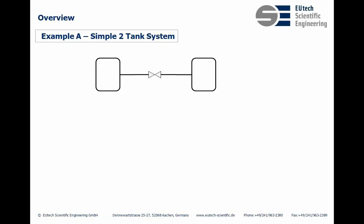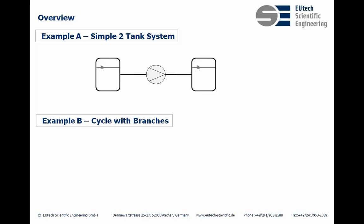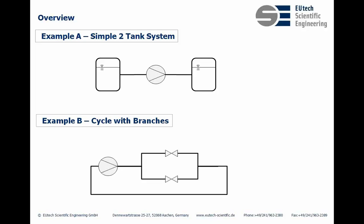Now let's jump into the topic. For today's presentation we selected two typical flow schemes which are very often appearing in cooling and heating cycles. The first one is a very simple system — just two volume elements connected with a valve or maybe a pump, and the two tanks may contain purely gas, purely liquid, or two phases. The second typical example is a cycle with branches, where a pump drives flow through the complete cycle, you split into two branches with pressure drops, and maybe one branch goes through a heat exchanger — a typical situation for a temperature control system.